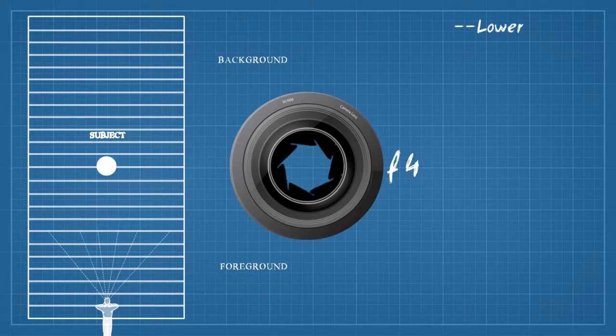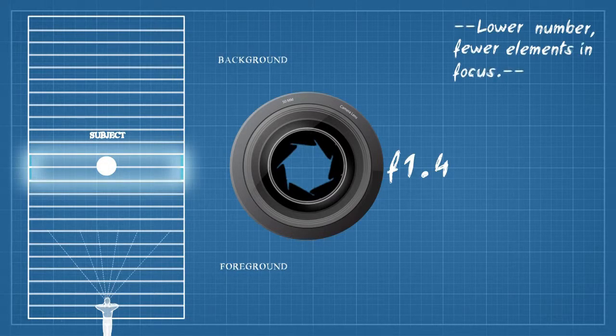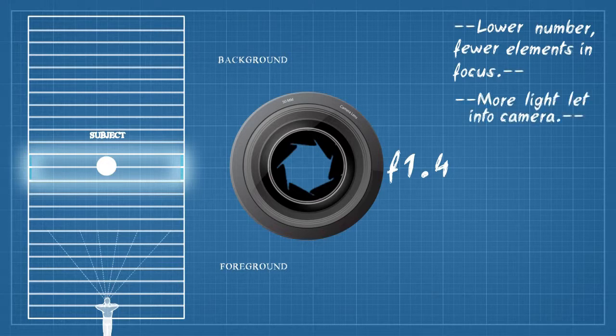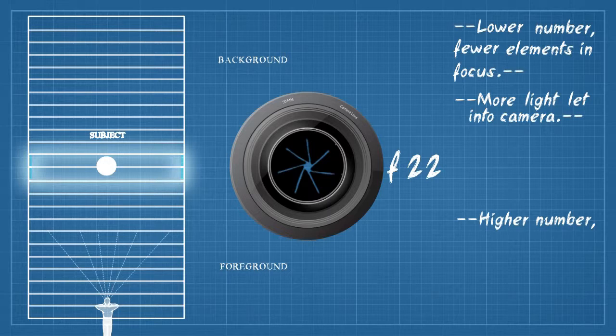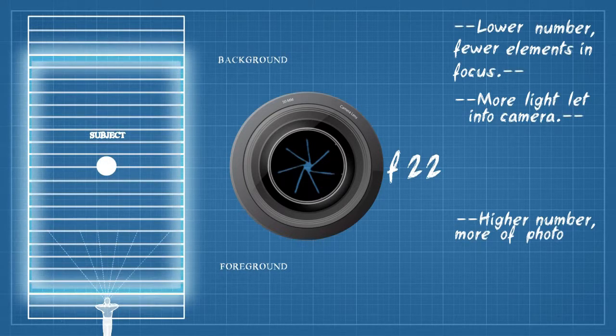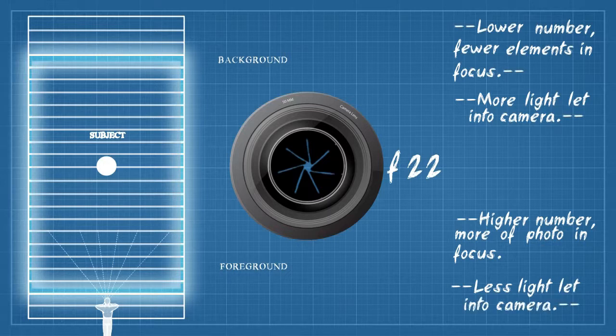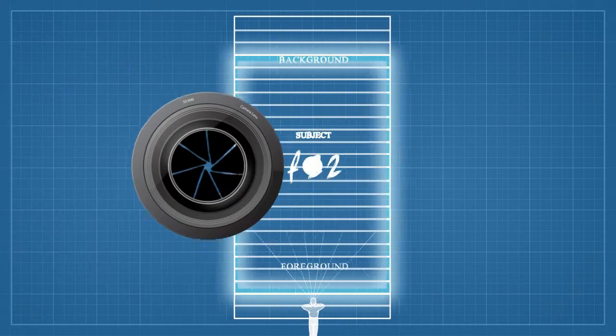The lower the actual number of your aperture setting, the fewer elements of your photo will be in focus and the more light will be let into your camera. The higher the actual number or numeric value of the aperture setting, the more of your photo will be in focus, but less light will be let into your camera. And that's really where the balance comes into play.